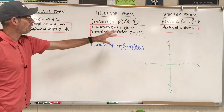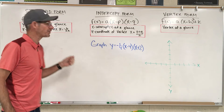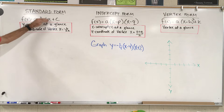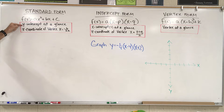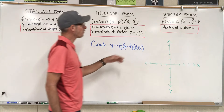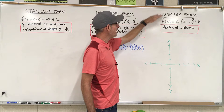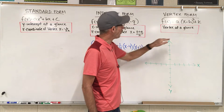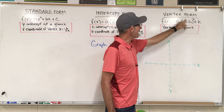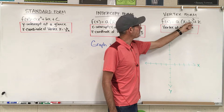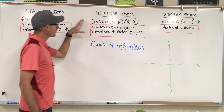We know three different forms of the equation for a quadratic function. The first one we learned was standard form, f of x equals ax squared plus bx plus c. You can tell the y-intercept at a glance because c is the y-intercept, and you can find the x-coordinate of the vertex by using the formula x equals negative b over 2a. The next form is vertex form, where you can find the vertex at a glance, and the vertex is h, k. In vertex form, because of the minus sign, the h value or x-coordinate of the vertex is going to have the opposite sign that you see inside the parentheses. Now we're working on intercept form.